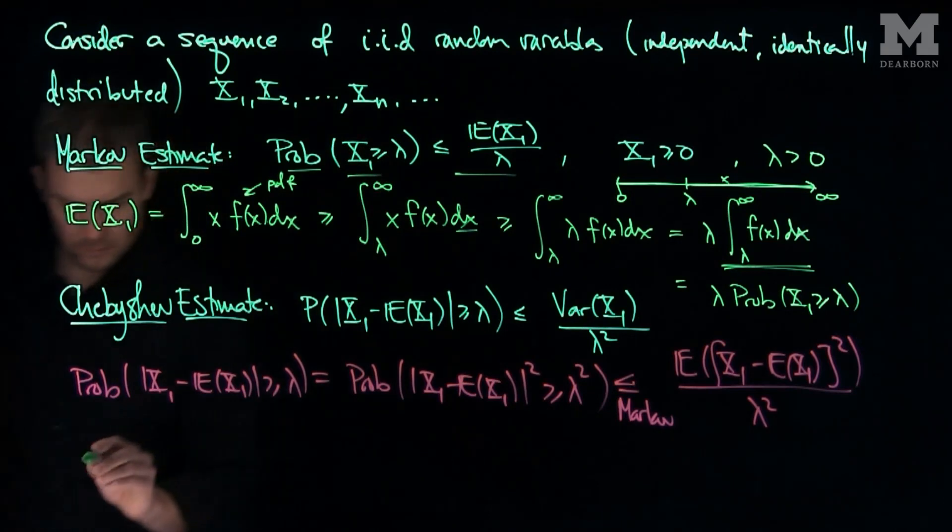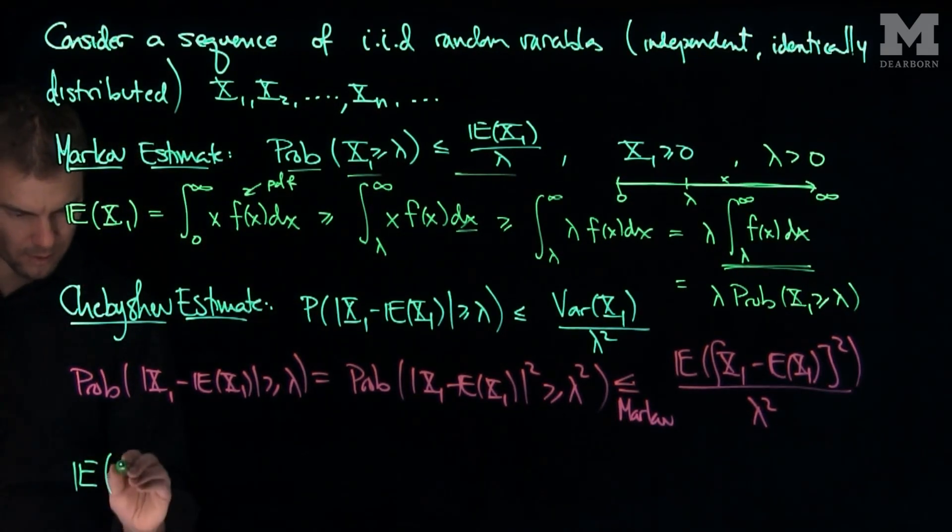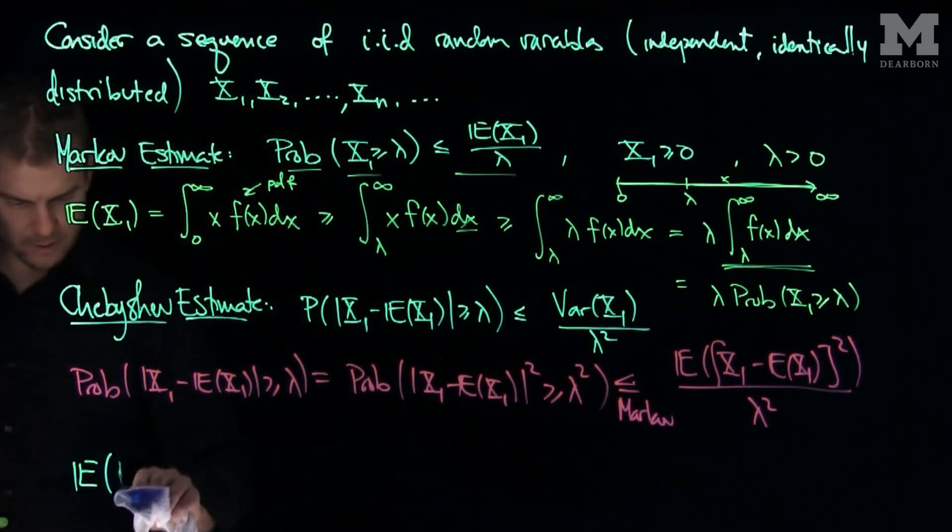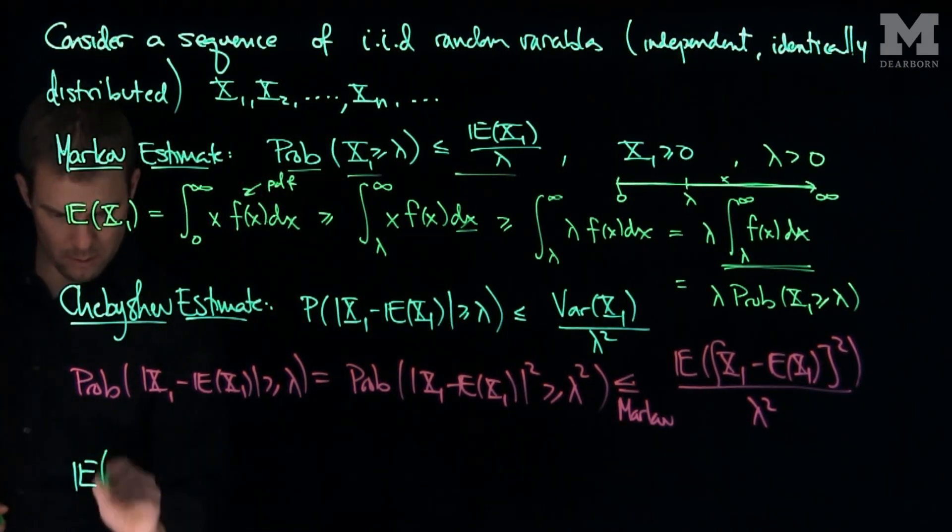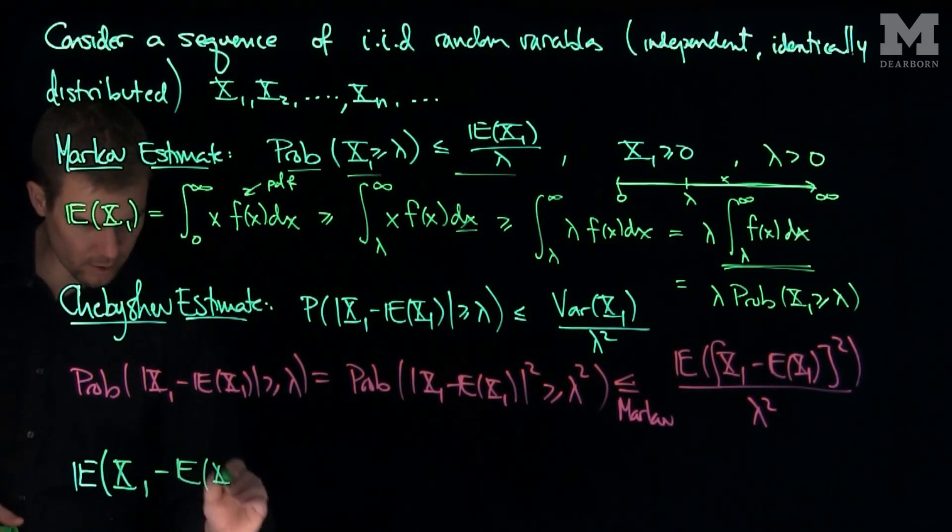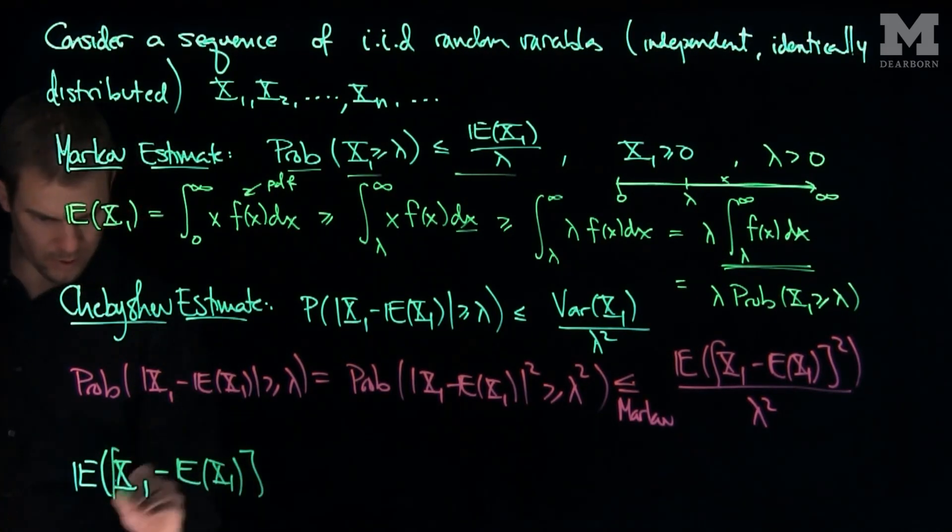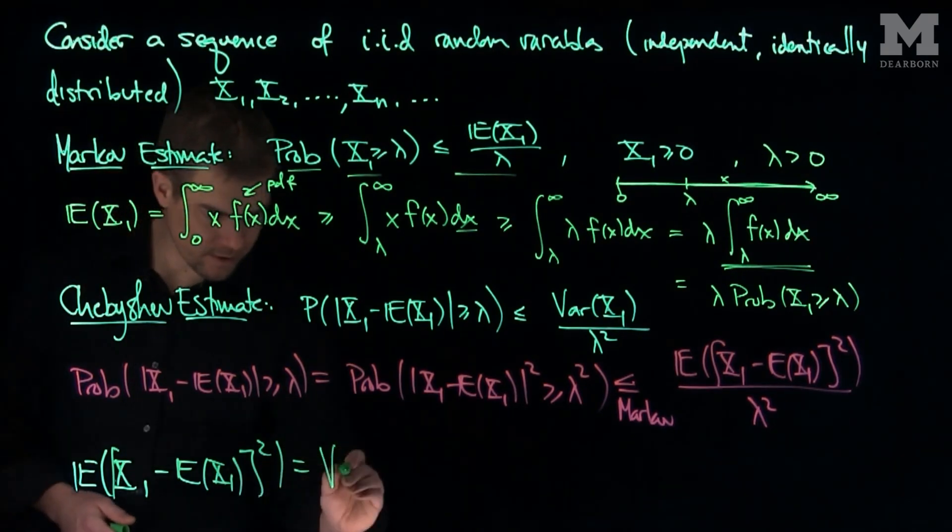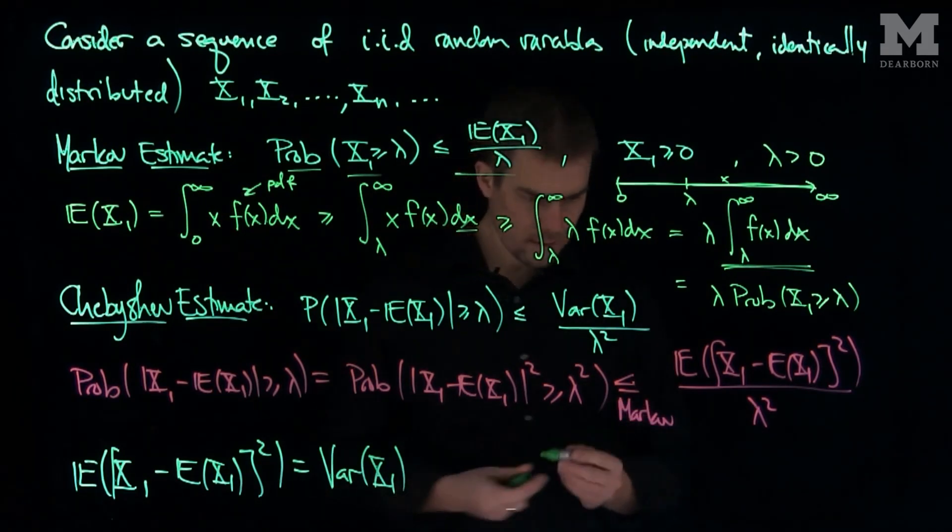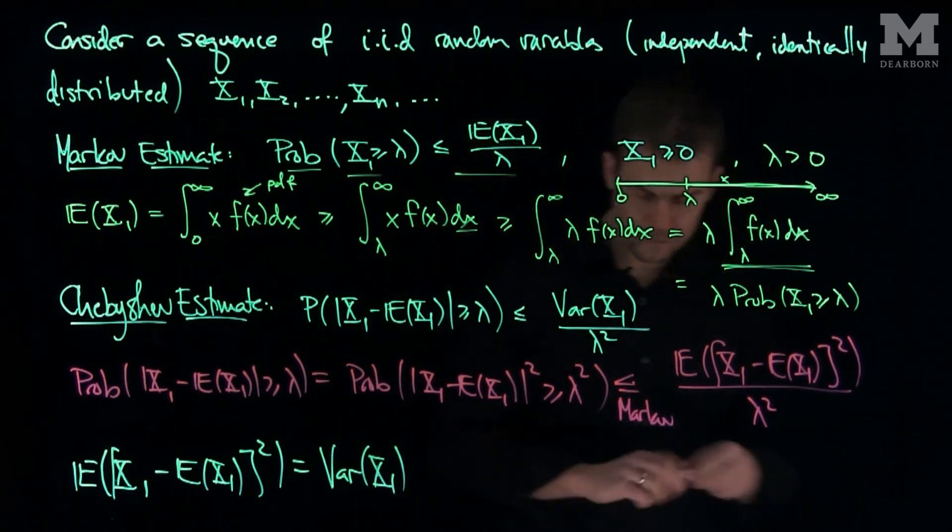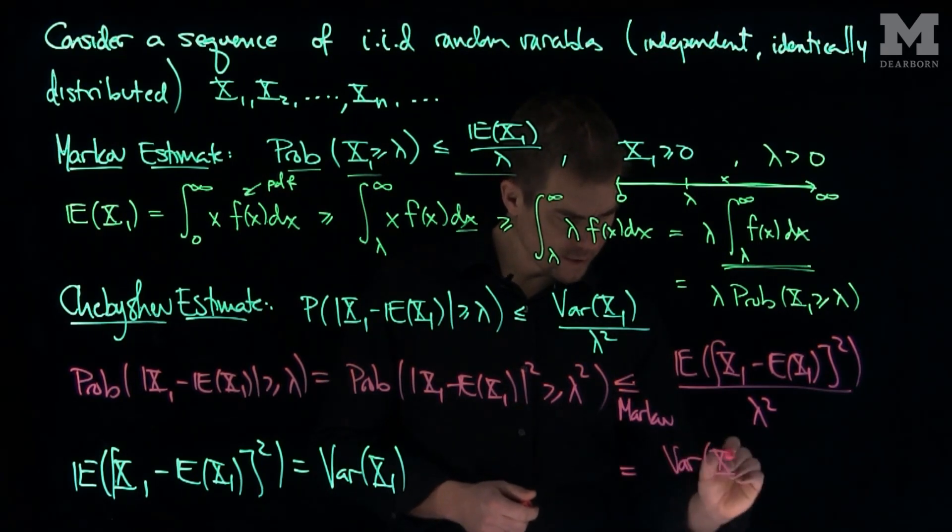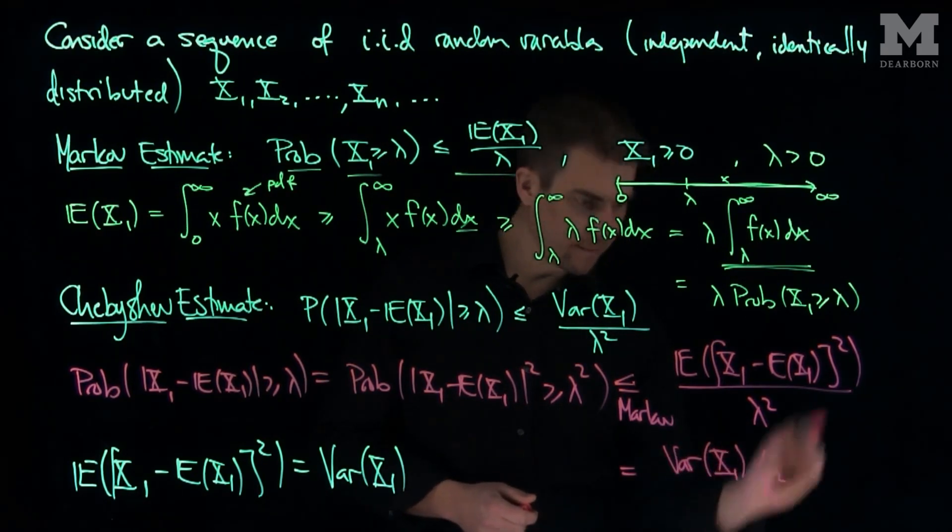We can note that the expected value of X1 minus the expected value of X1 quantity squared is exactly just the variance of X1. And so this expression over here is just equal to the variance of X1 over lambda squared.